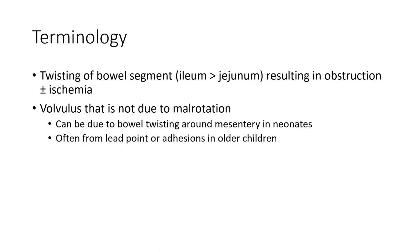Terminology. Segmental volvulus is a twisting of bowel segments, predominant in ileum more than jejunum, resulting in obstruction plus or minus ischemia. Volvulus that is not due to malrotation can be due to bowel twisting around a Meckel's diverticulum in neonates, often from lead points or adhesions in older children.